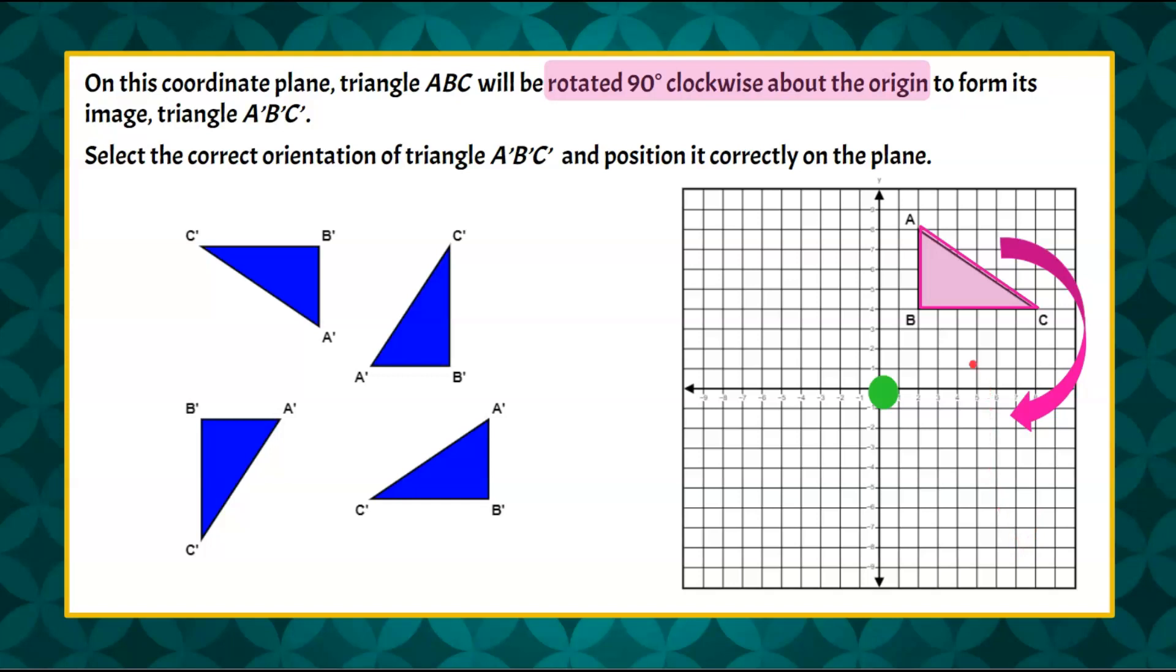So you might just pick up your computer and turn it one turn to the right, or if you have tracing paper you could set your tracing paper on here. Put your pencil on the origin and turn your tracing paper one turn 90 degrees to the right.